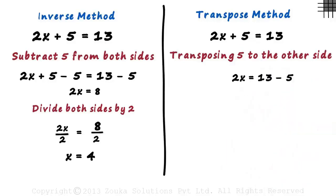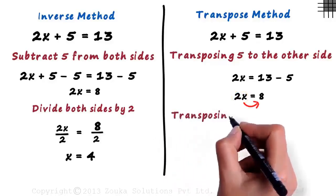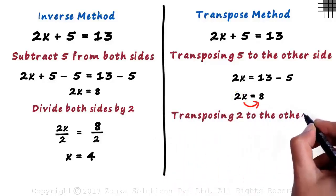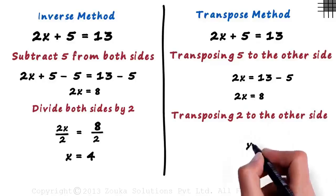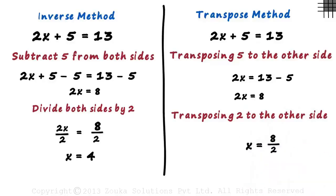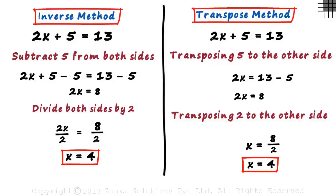We get 2x equals 13 minus 5, which gives us 2x equals 8. The next step is to eliminate 2 from the left hand side. Since 2 is multiplied with x on the left hand side, we transpose it to the right hand side and divide 8 by 2. So we get x equal to 8 by 2, which gives us the value of x as 4. We can see that we get the same answer using both methods.